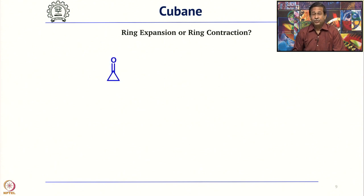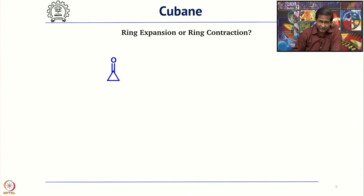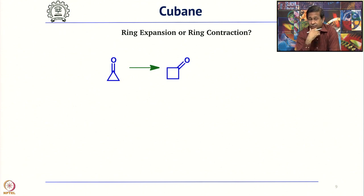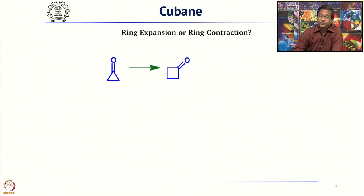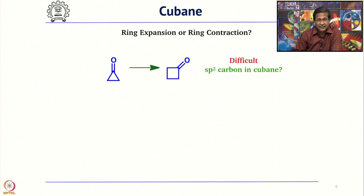For ring expansion, take cyclopropanone and treat with diazomethane — it can undergo ring expansion to form cyclobutanone. But the problem is in the end product Cubane, all carbon atoms are sp3. Here you have one sp2 carbon atom, so you have to remove this ketone — that is a bit tedious.